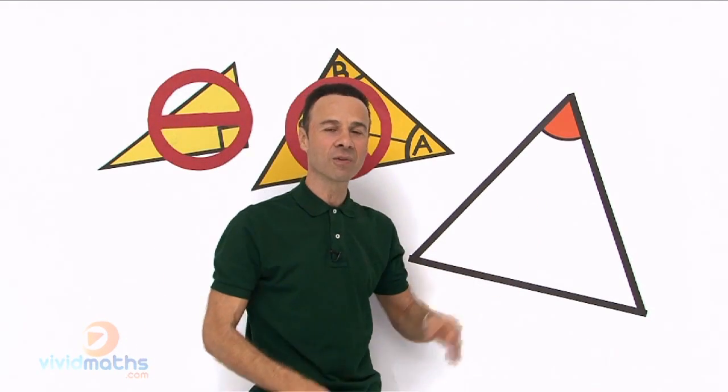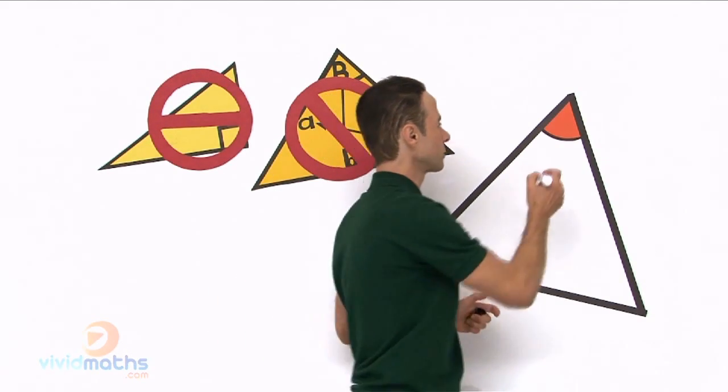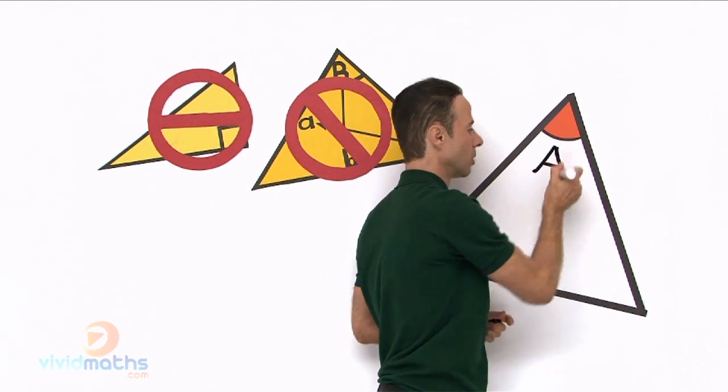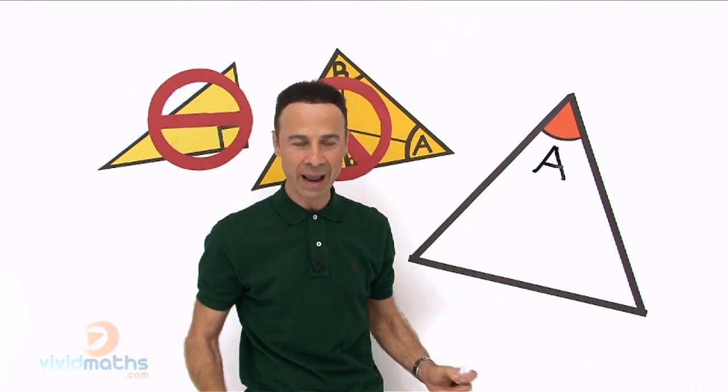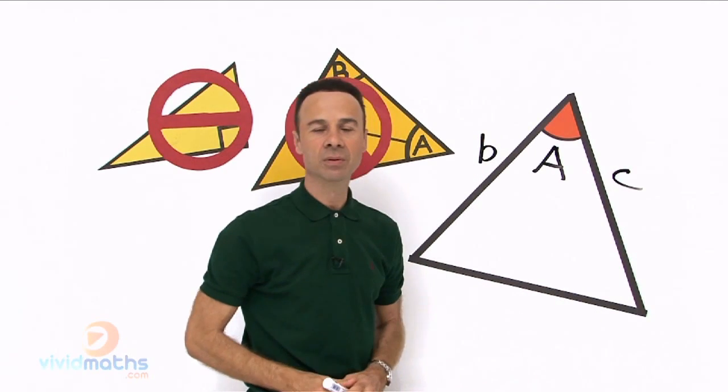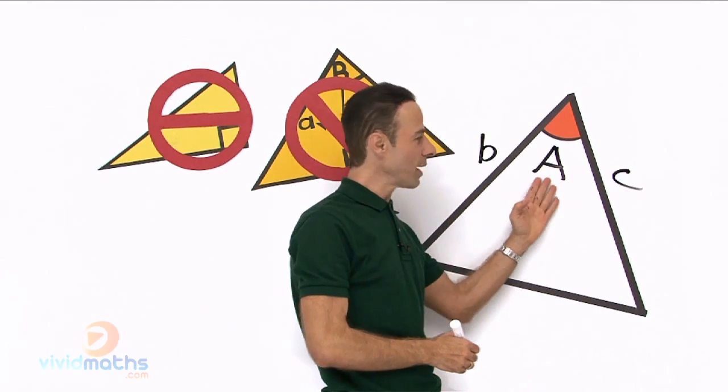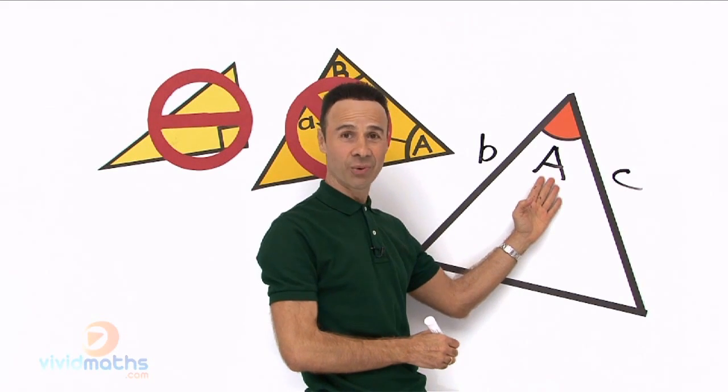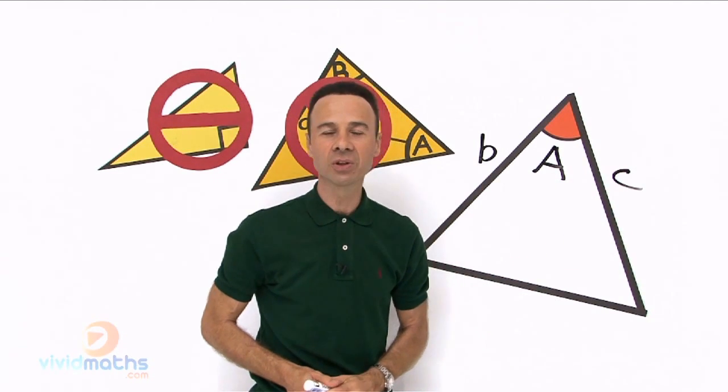What happens when you go into a test and they give you a triangle like this and they give you an angle right there and right next to the angle surrounded by that angle they give you two lengths. In other words the angle is snug right in the middle between and surrounded between two lengths on either side, what do you do then?